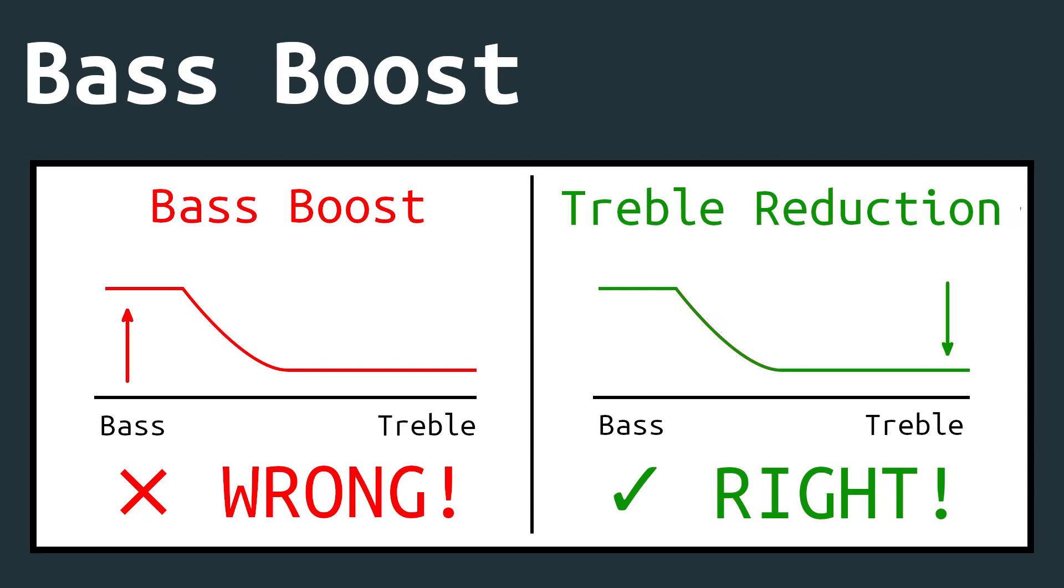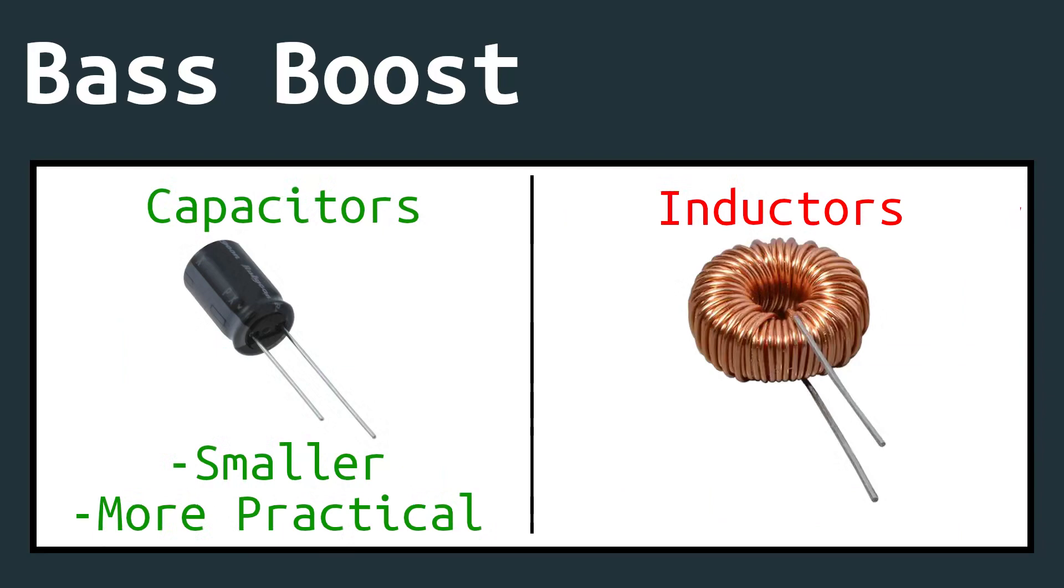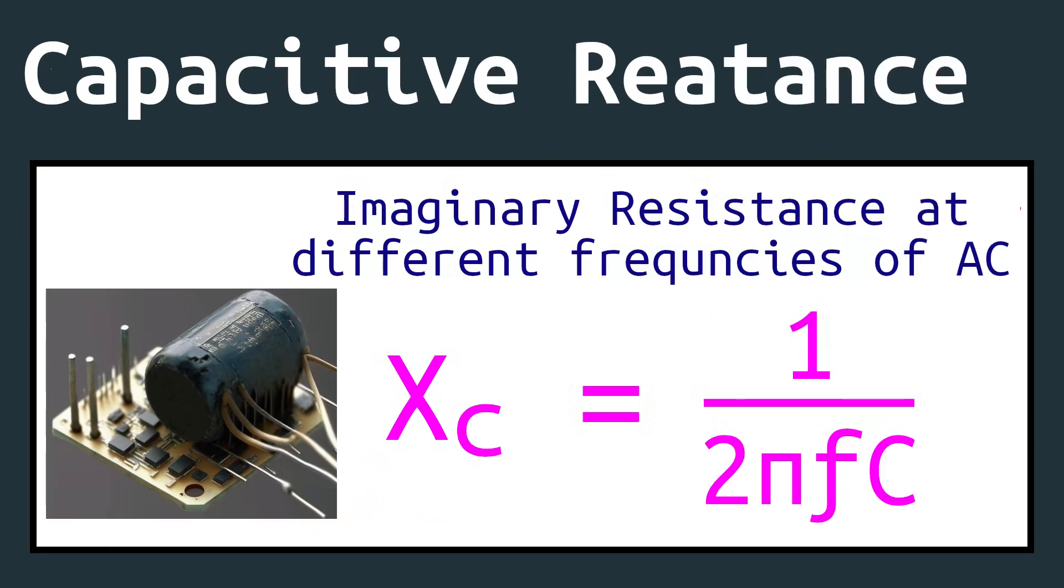Two components are capable of achieving the behavior that I'm talking about. The capacitor and the inductor. Since capacitors are much more practical to use inside of circuits, we'll focus on those instead of inductors. You may or may not be familiar with capacitive reactance. But the basic idea is that a capacitor acts like a different value resistor depending on the input frequency. The equation for this reactance is 1 divided by 2 pi frequency capacitance. Where F is the frequency in hertz and C is the capacitance of the capacitor in farads.